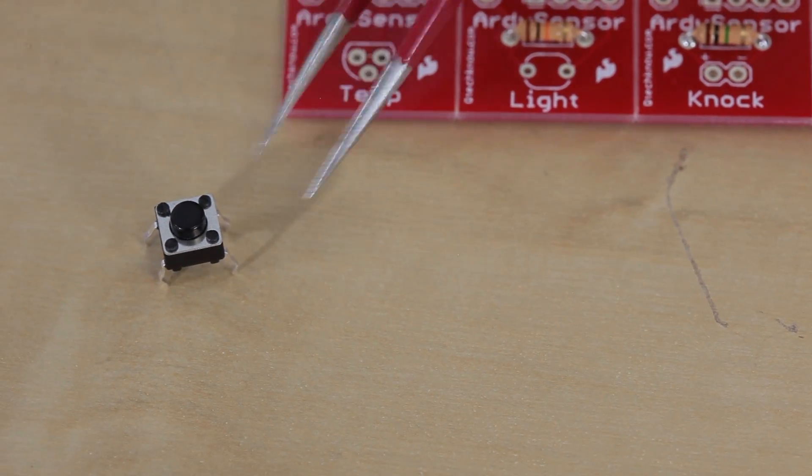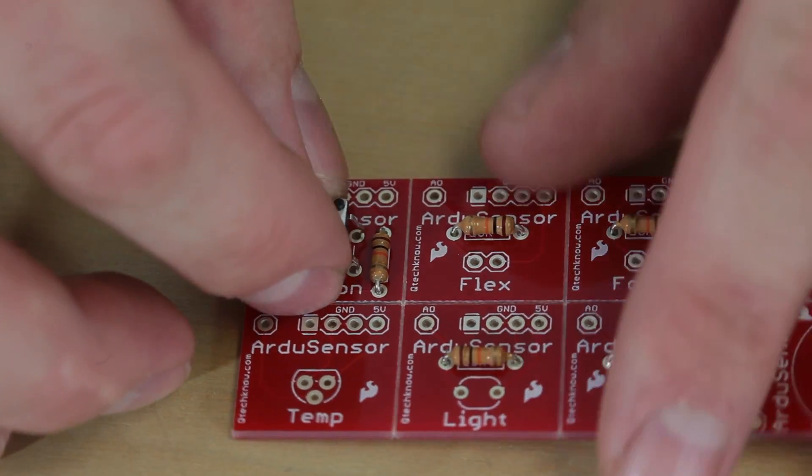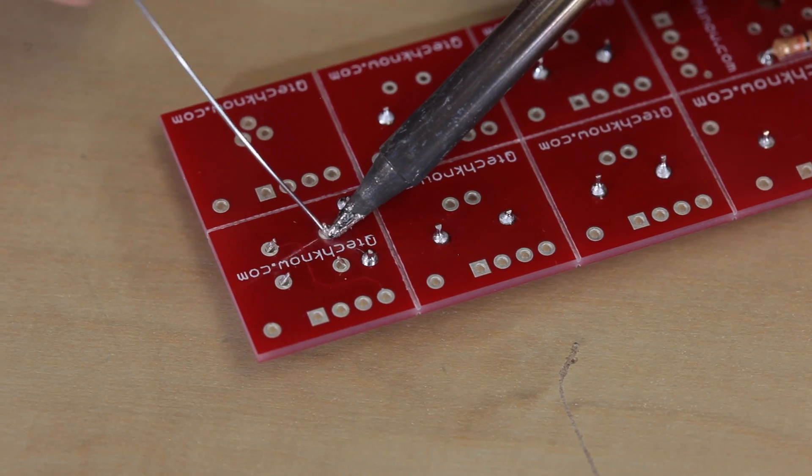Next we're going to take the button and put it where it says button. The orientation doesn't matter, so we're just going to match it up with the silkscreen, press it into place, and solder it from the backside.